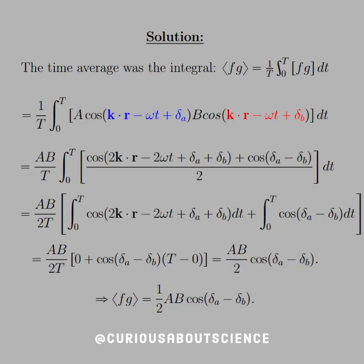Alright, cool. So we see here that the time average was the integral of 1 over T, integral 0 to T of the product. So if we take the product, the A, B's come out front. Here we use some more trig identities with the sum and differences to combine them, and then we split up the integrals.